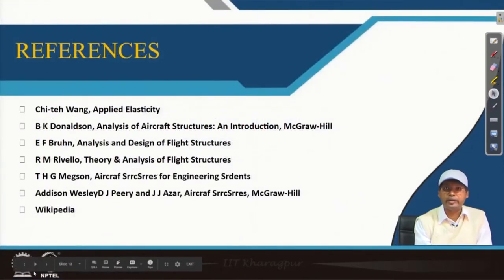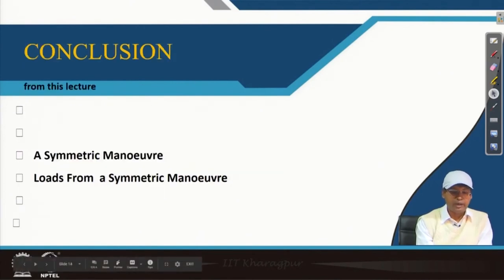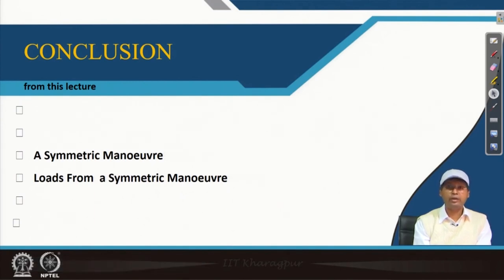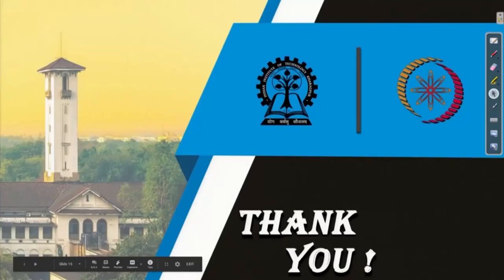In conclusion, for a general symmetric manoeuvre we have learned what the manoeuvre is, what forces act on the aircraft, and considering standard plots how to solve for lift, drag, tail plane load, and forward inertia force. References are the standard references followed throughout. With this we move to the end of today's lecture. Thank you for attending.